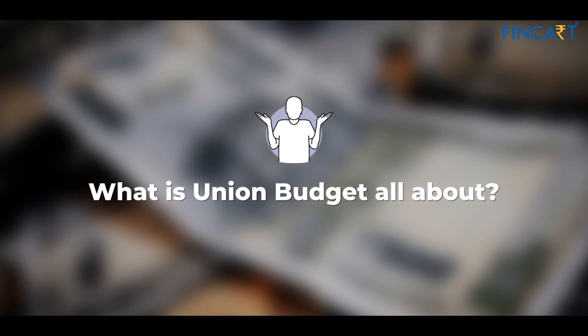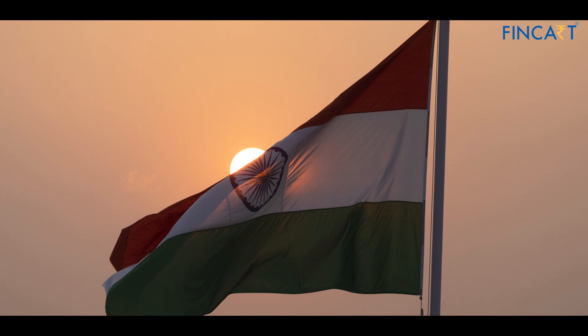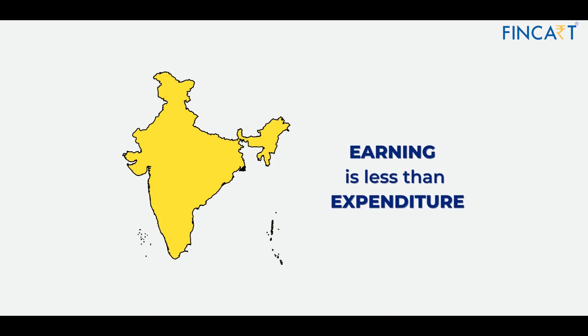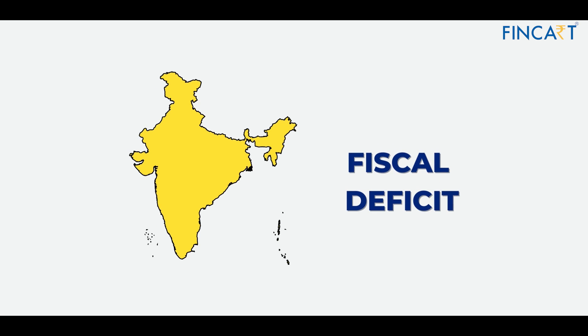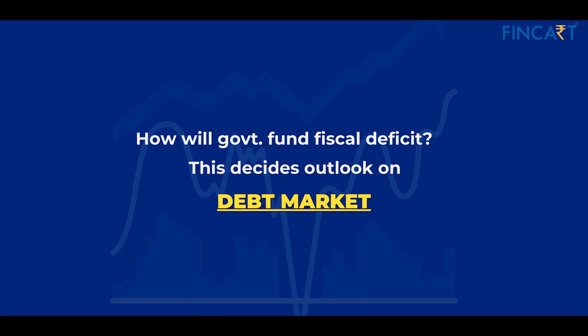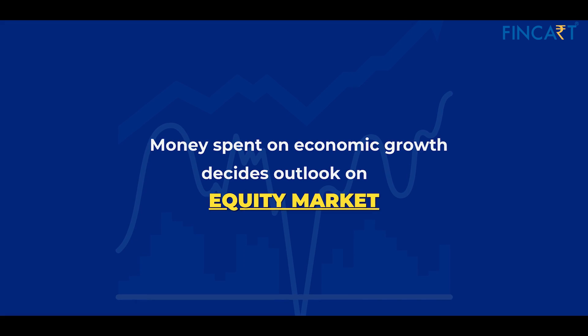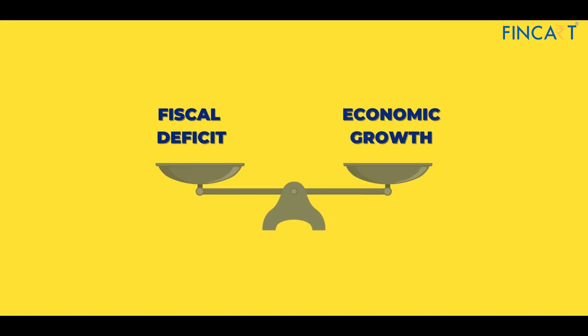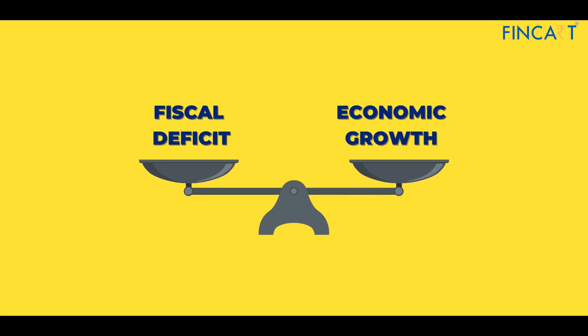So let us understand what the Union Budget is all about. The Union Budget clearly spells out what will be India's earnings and how much they will spend, and where they will spend for India's growth. India is a country where our earning is lower than our expenditure — this gap is called fiscal deficit. How the government funds this fiscal deficit decides the outlook on the debt market, and the money it spends towards the growth of the economy decides the health of the equity market.